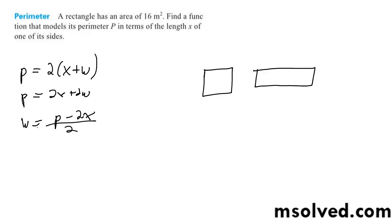And so this is one side. Now to find the perimeter in terms of length x, it's going to be equal to 2, again, times just a regular x, plus p minus 2x over 2.